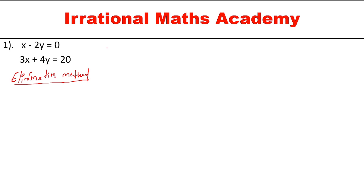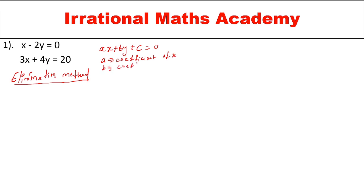Before that, what is the general form of a linear equation in two variables? It is ax plus by plus c equal to 0. Here x and y are variables, a is the coefficient of x, b is the coefficient of y, and c is the constant term.